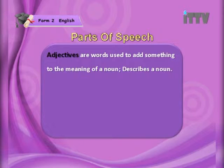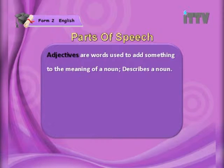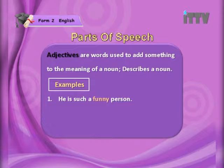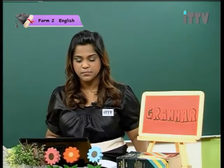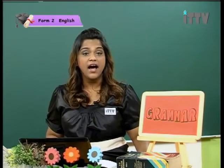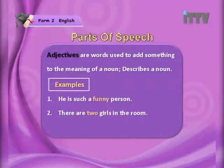Adjectives are words used to add something to the meaning of a noun. Basically, it describes a noun. For example, he is such a funny person. Look at this example — funny is the adjective. Another example: there are two girls in the room.